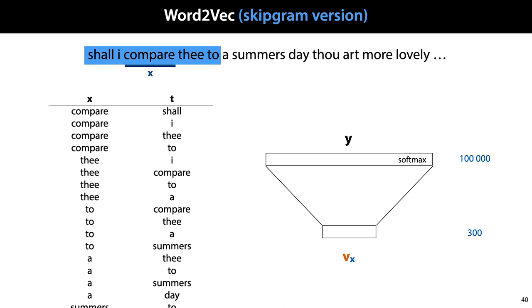And the basic idea is that this information captures a lot of the meaning of the word. This is sometimes called the distributional hypothesis, the idea that the meaning of a word is captured by the words it occurs together with. Note that the softmax activation over 100,000 outputs is very expensive to compute, and you need some clever tricks to make this feasible. We won't go into them here.